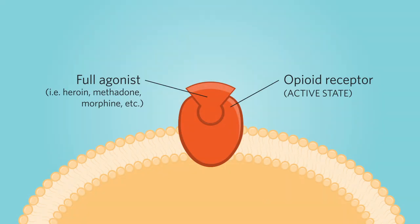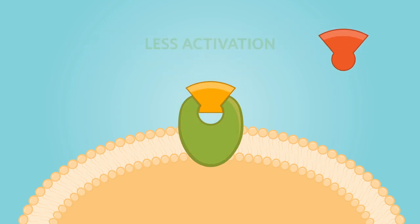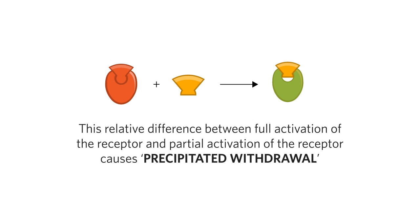The following is a demonstration of precipitated withdrawal. Buprenorphine has a very high affinity for the opiate receptor. If it is given when a full opiate agonist is bound to the opiate receptors, it will displace them. It is this relative difference between full activation of the receptor to partial activation of the opiate receptor that causes precipitated withdrawal.